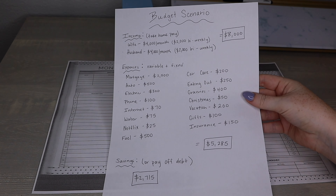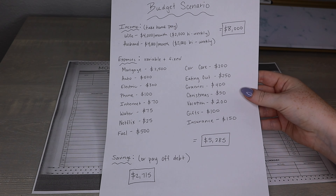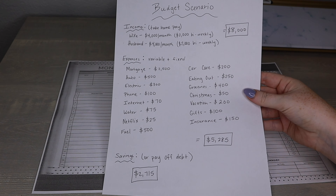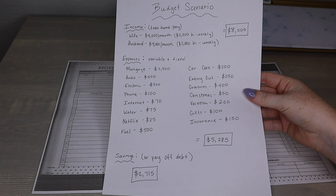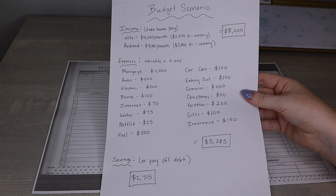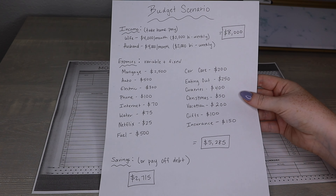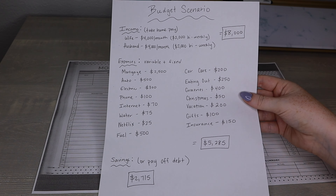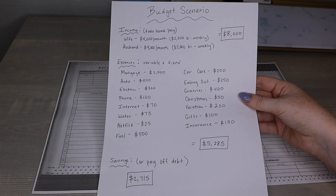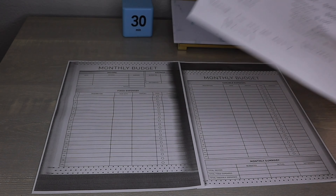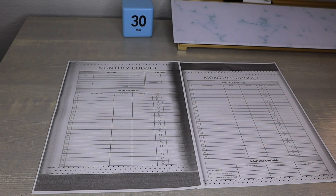For this scenario we're going to have a husband and wife team, and they each make four thousand dollars a month — two thousand dollars each bi-weekly. This is their take-home pay, not their gross income; it is their net pay that hits their bank account, which is a total of eight thousand dollars per month.